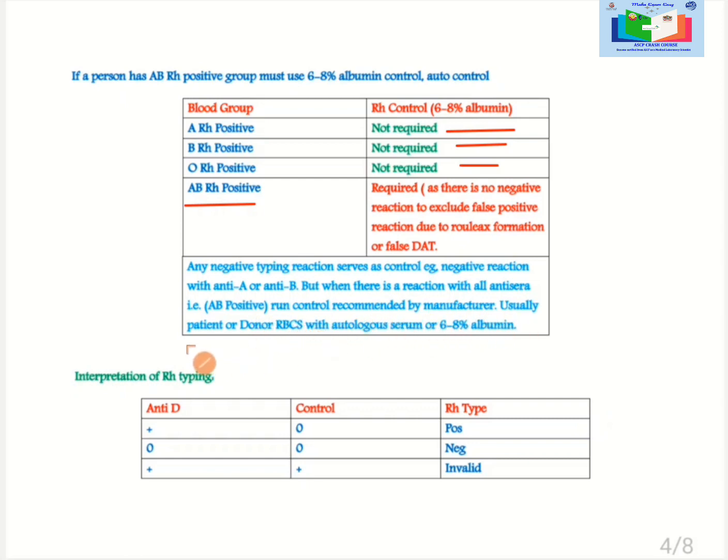We usually test the patient or donor red blood cells with autologous serum or 6-8% of albumin. Interpretation of RH typing: If there is a reaction with anti-D and RH control is negative, RH type will be positive. If there is no reaction with anti-D and RH control is also negative, RH type is negative. If there is a reaction in both with anti-D and RH control, test is invalid. Now look for any problem which is causing this issue. RH control should be negative always.